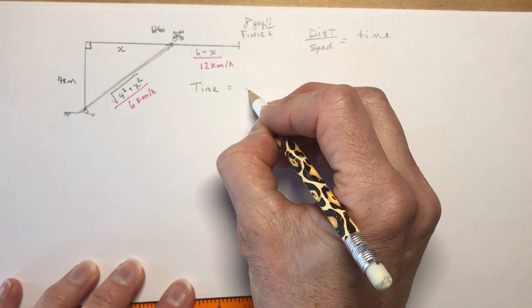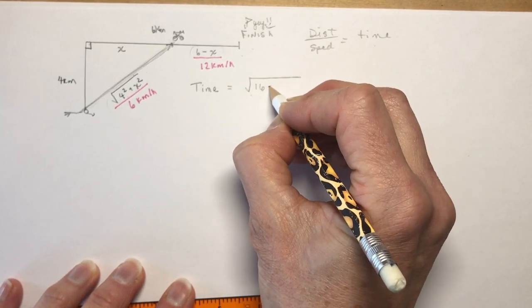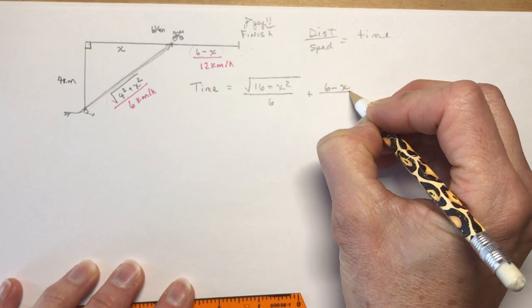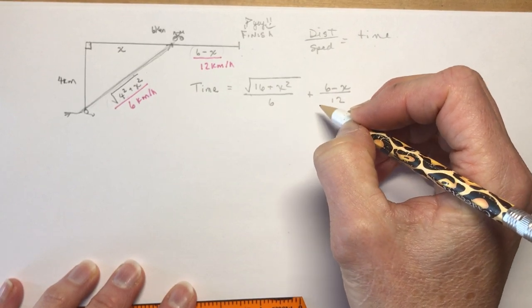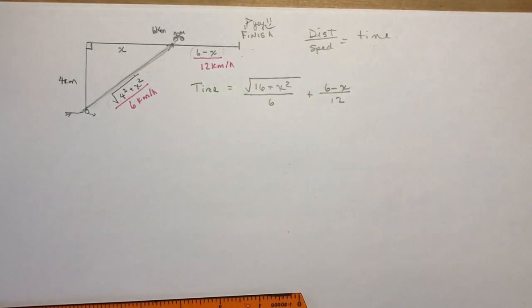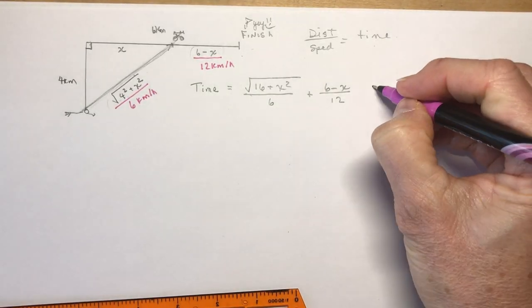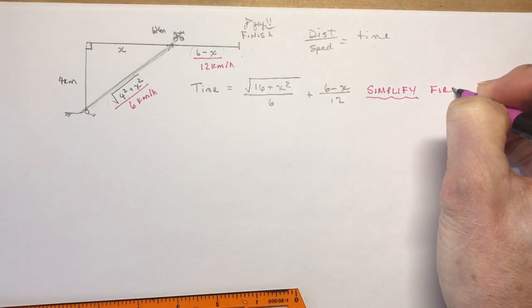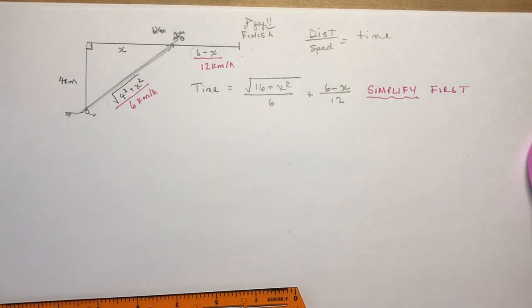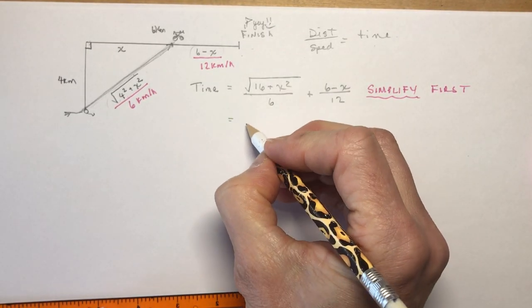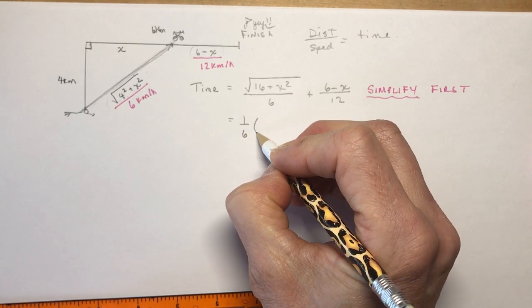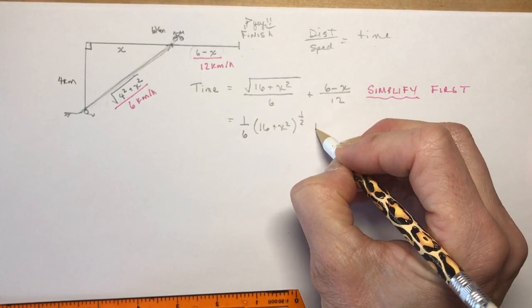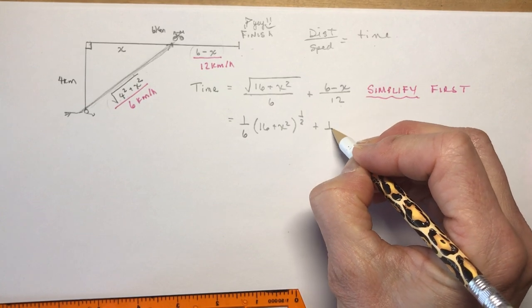The time and we're trying to minimize it is going to be equal to—let's just make this √(16 + x²) over 6, and to that I'm going to add (6 - x) over 12. Now before you start this, before you do the derivative, simplify first because you'll see that there are some things here that we really don't need to be working with. I write this as 1/6 times (16 + x²)^(1/2). This I'm going to break into two parts as 6/12 or 1/2 minus 1/12 times x.